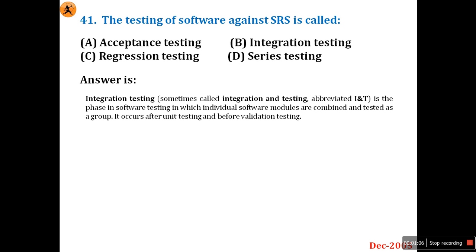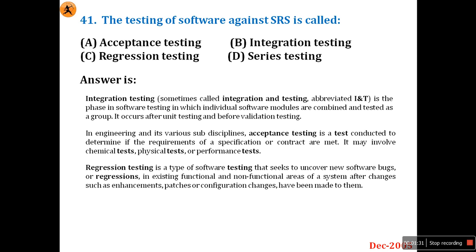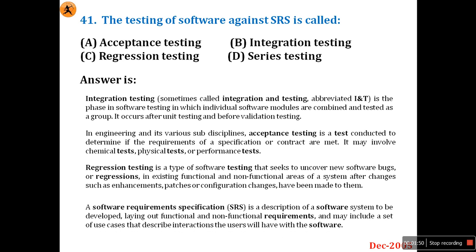Acceptance testing is a test conducted to determine if the requirements of a specification are met. It may involve chemical, physical, and performance tests. Regression testing is the type of software testing that seeks to uncover new software bugs and regressions in existing functional and non-functional areas of the system after enhancements, patches, or configuration changes have been made.